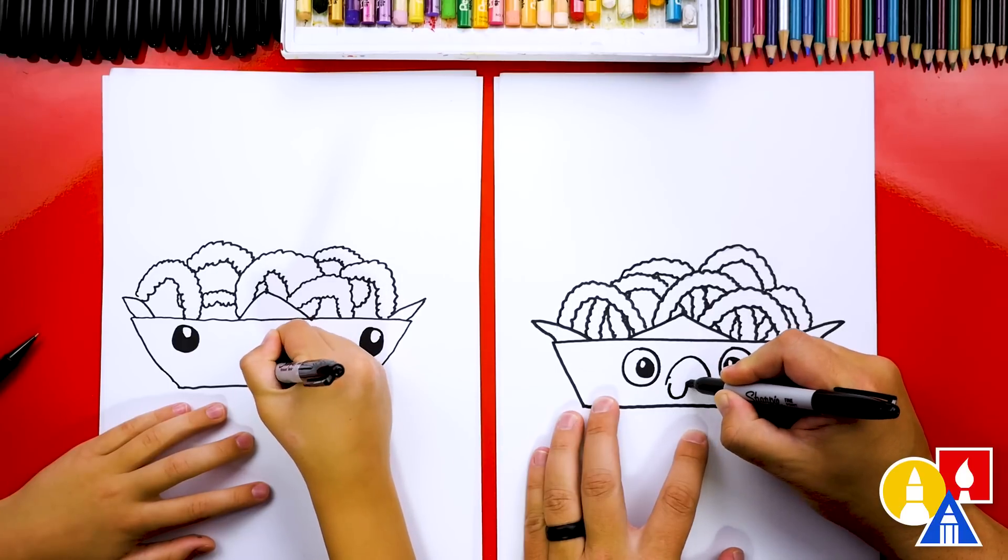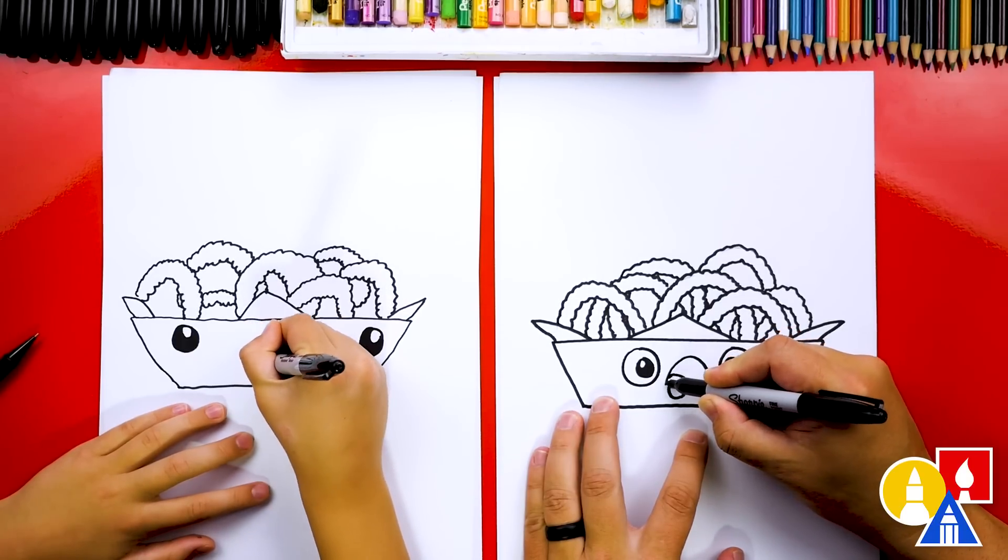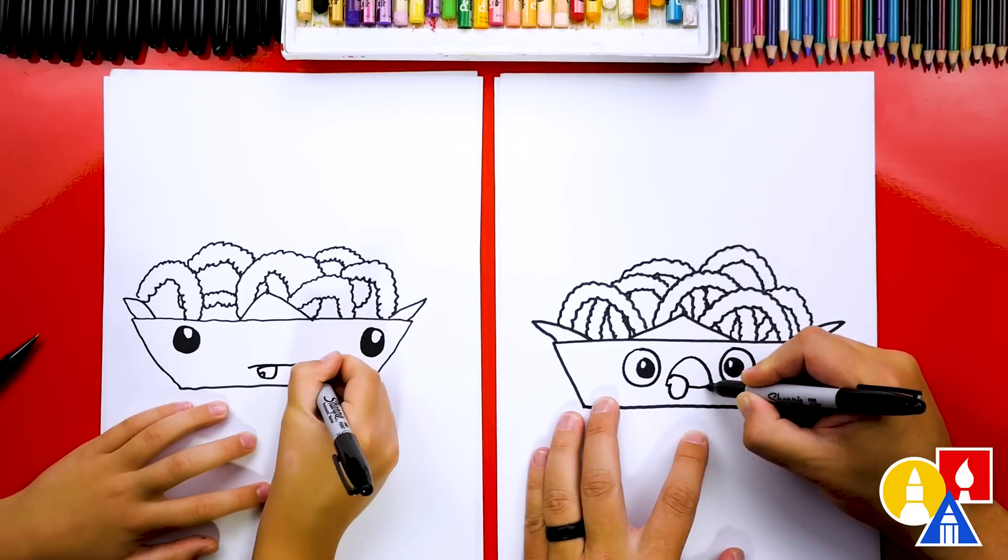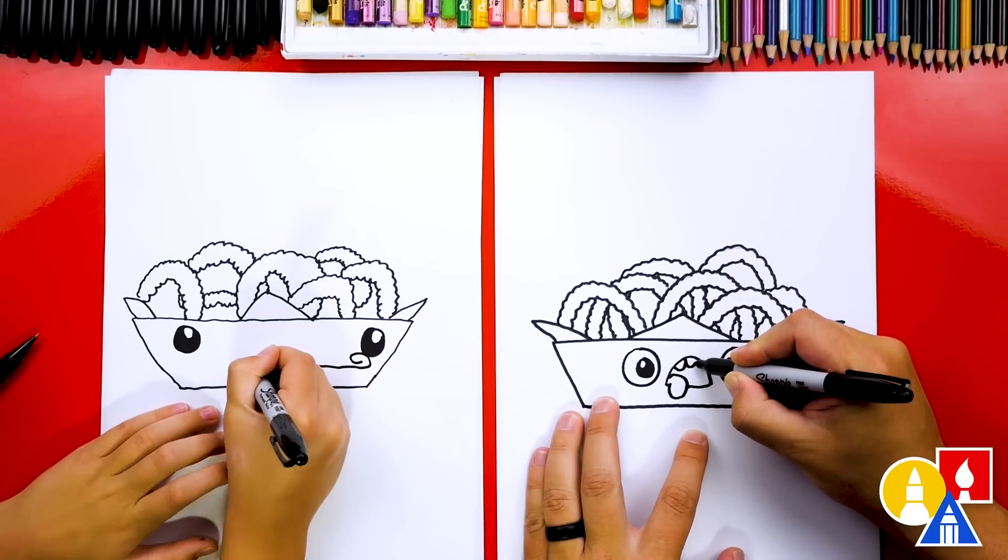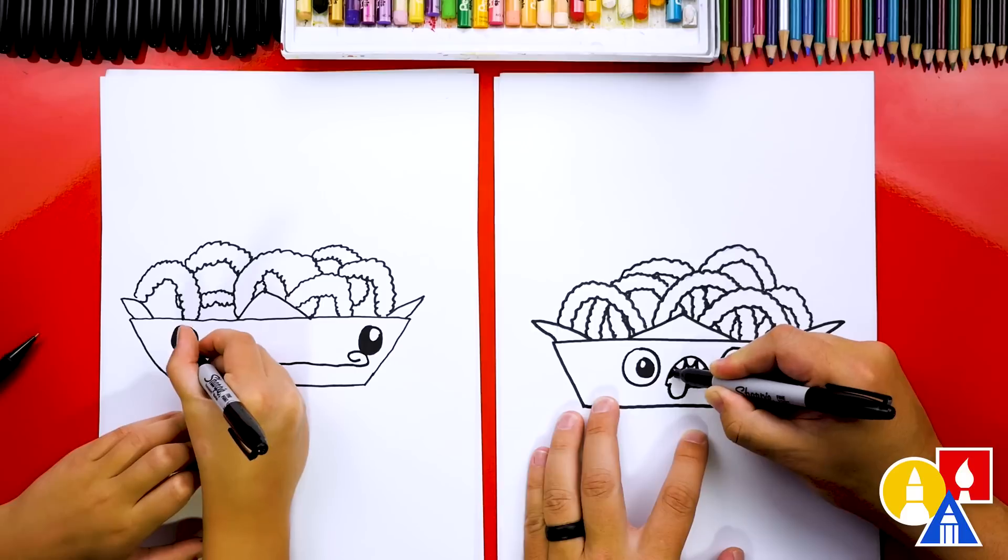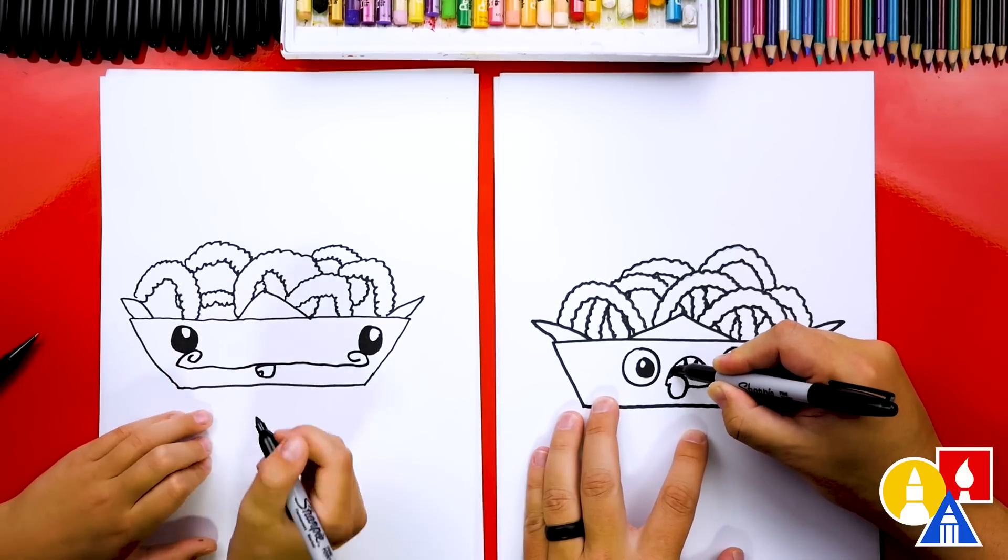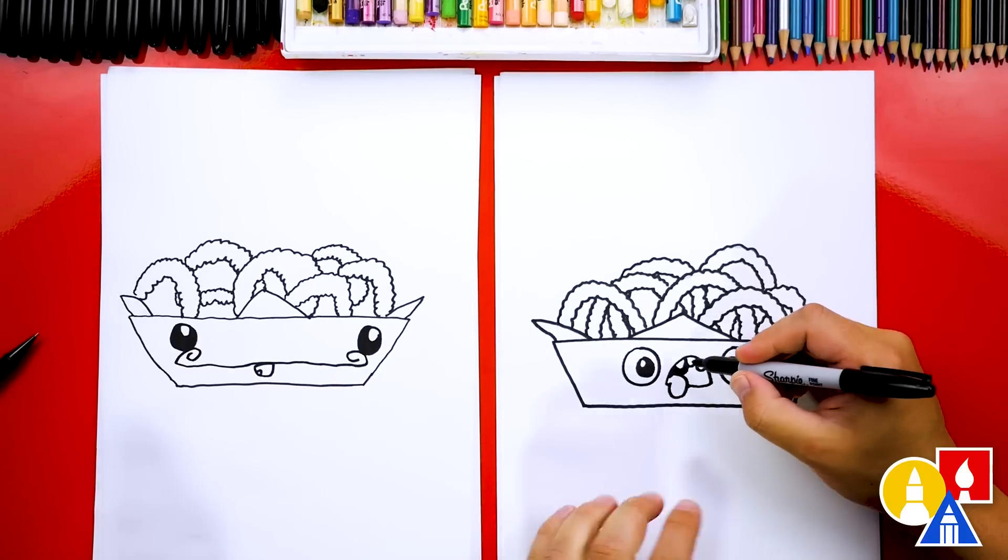And then maybe the tongue's even hanging out too. And we got to add some teeth also. Then I'm going to color in the inside of the mouth. Oh, that is the biggest mustache. I love it.